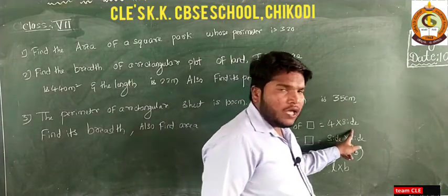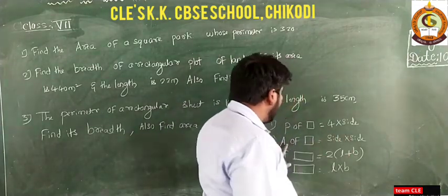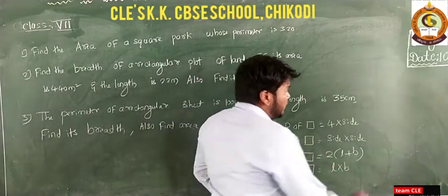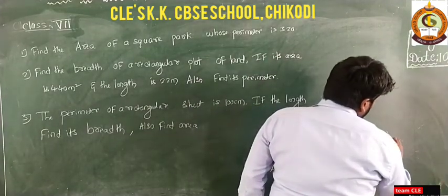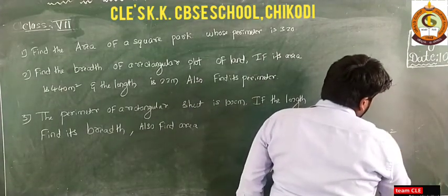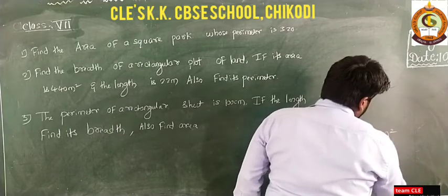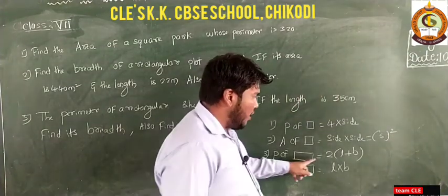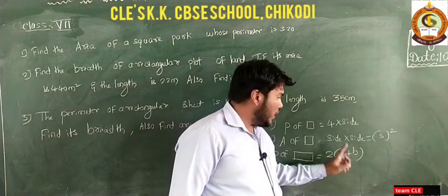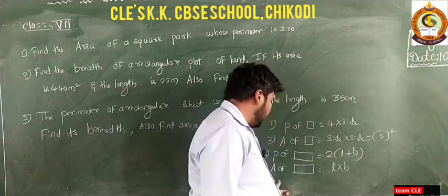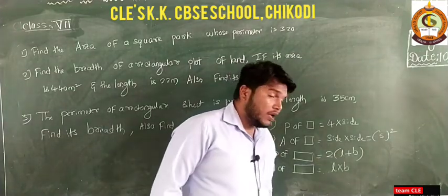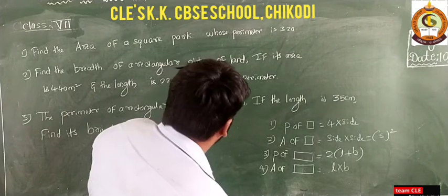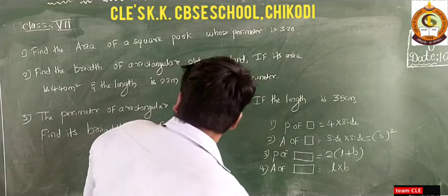Before solving, remember these formulas: perimeter of square equals four times the side; area of square equals side into side, that is side squared; perimeter of rectangle equals two into L plus B; and area of rectangle equals L into B. Using these four formulas we are going to solve the questions.